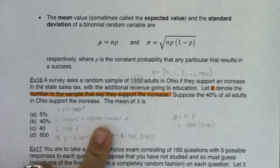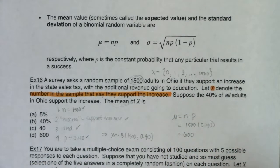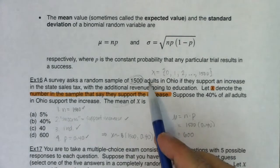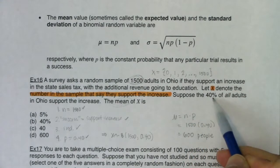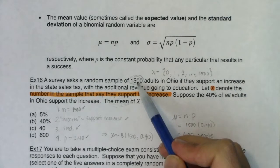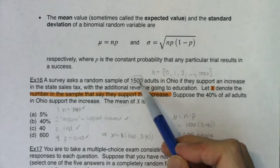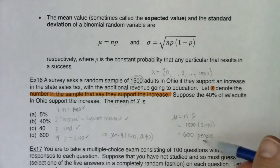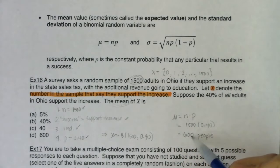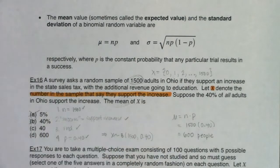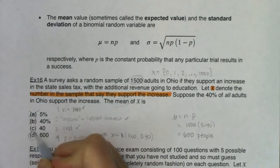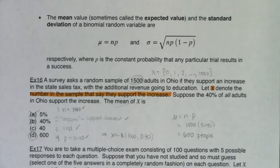And 600 what? What are the units? This is 600 people. If we just take a step back: if 40% of Ohio folks support the bill, I expect 40% of my sample. Half would be 750, so a little bit lower than that — 600 people. If I'm talking to 1500 people, I expect to see that 600 support it. When we look at the options, I'm not asking about relative frequencies. 40 is way too low, and D is my answer.